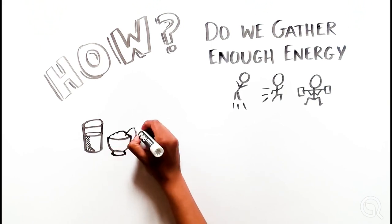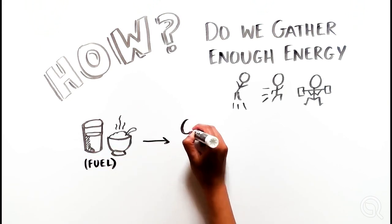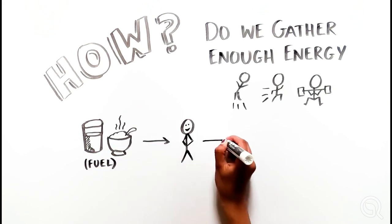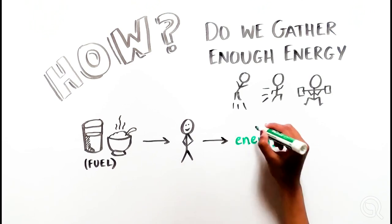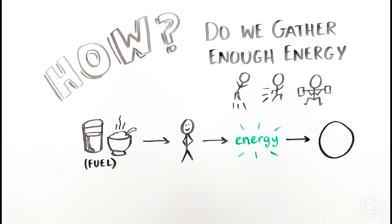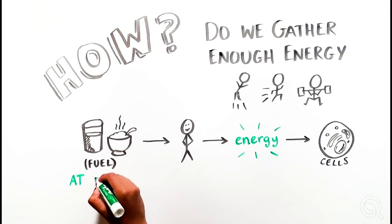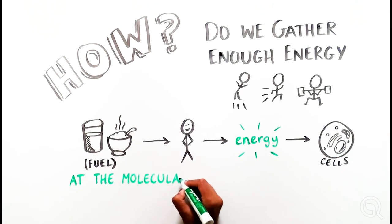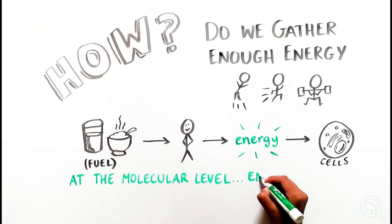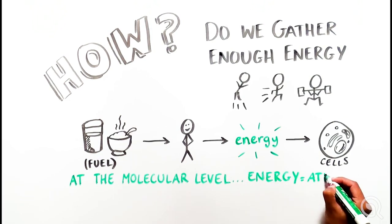These all depend on your body processing fuel to make energy. For us, this fuel takes the form of food and water. Our bodies are able to convert the food and water that we consume into compounds that our cells can use for energy. At the molecular level, most of this energy is stored in the form of adenosine triphosphate, or ATP.